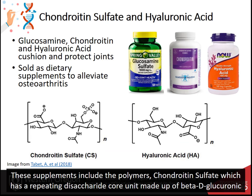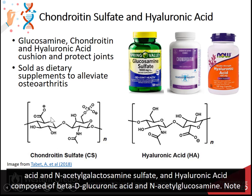These supplements include chondroitin sulfate, which has a repeating disaccharide core unit made up of beta-D-glucuronic acid and N-acetylgalactosamine sulfate. And hyaluronic acid is composed of D-glucuronic acid and N-acetylglucosamine.